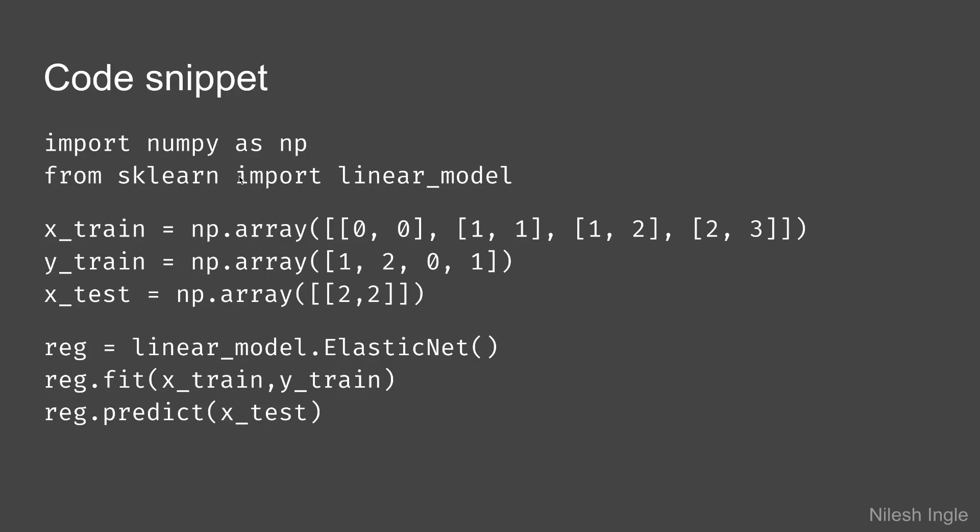And for implementation this is the code snippet where we import the linear model. This is the train and test data. Then we create a variable reg, initialize it with linear_model.ElasticNet and then fit it on the x_train and y_train and then use that to predict x_test.